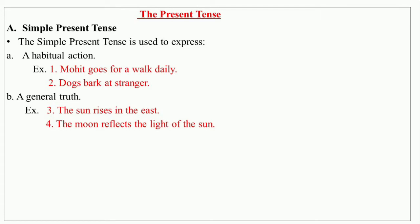Simple present tense is used to express habitual action and general truth. For example: 'Mohit goes for a walk daily' — the verb 'goes' shows the habit of Mohit. 'Dogs bark at strangers' shows the habit of dogs. Simple present tense is also used to express a general truth, such as: 'The sun rises in the east' and 'The moon reflects the light of the sun.' These are general truths.